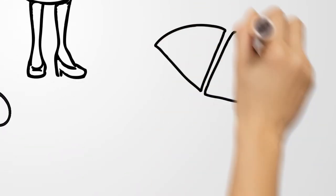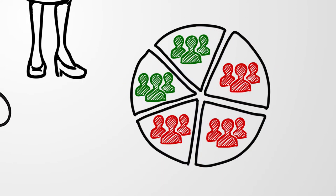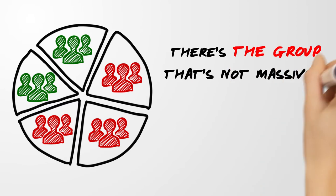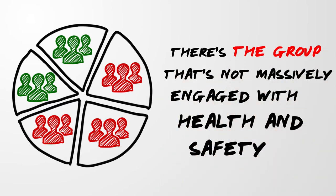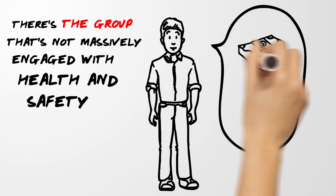Now we knew from some previous segmentation that you can really broadly put people into one of two groups. There's the group who are not massively engaged with health and safety at the moment. Sure, if you make it easy for them they're going to do the right things, but they're pretty conscious of their competing priorities.